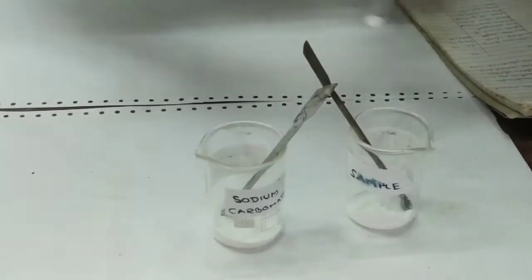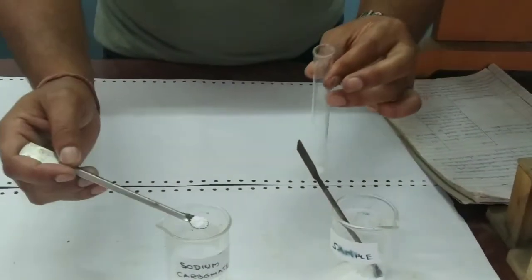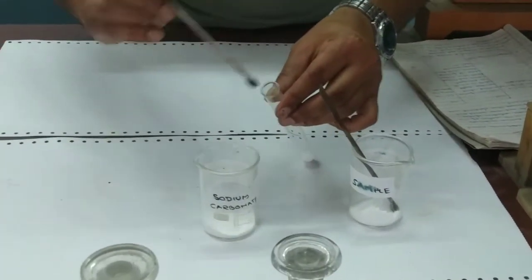One spatula and in that we need to add three spatula of sodium carbonate. So ratio is one is to three.